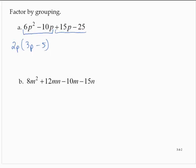And then I look at the second grouping, the remaining two terms. They have a common factor of 5. And so I will write plus 5. And that would leave a 3p minus 5.